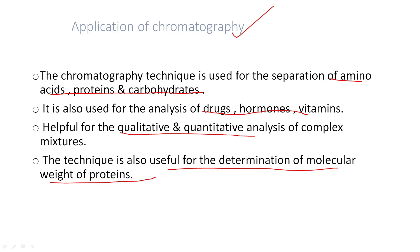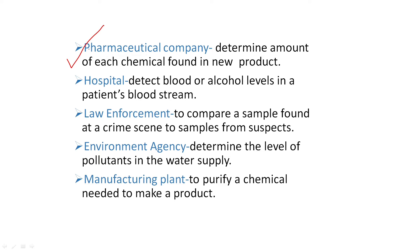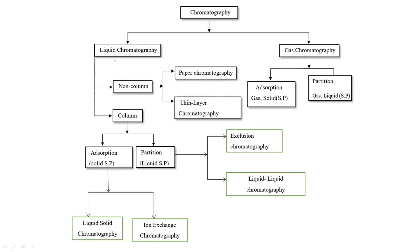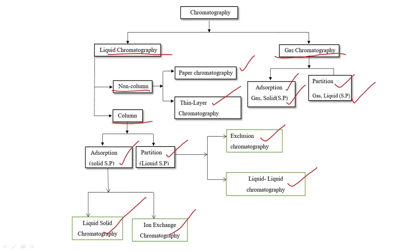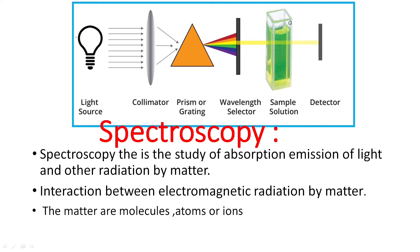Chromatography is used in pharmaceutical companies, hospitals, law enforcement, and environmental agencies. Types of liquid chromatography include: non-column methods such as paper chromatography and thin-layer chromatography; column methods such as adsorption (liquid-solid), partition (liquid-liquid), exclusion, and ion exchange chromatography.